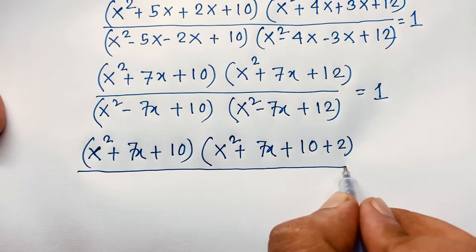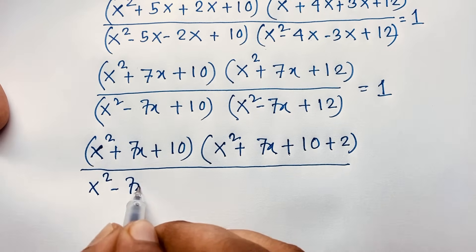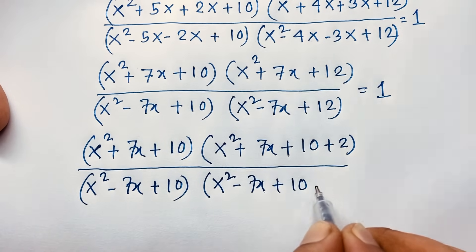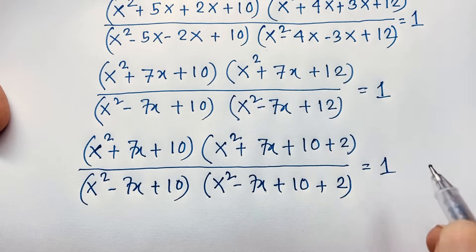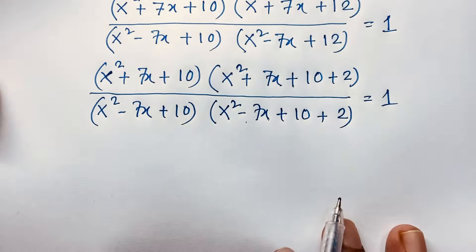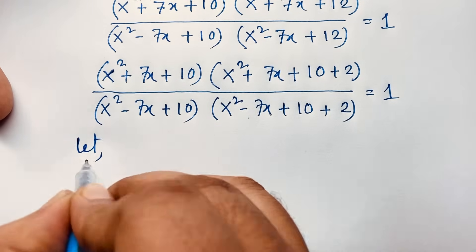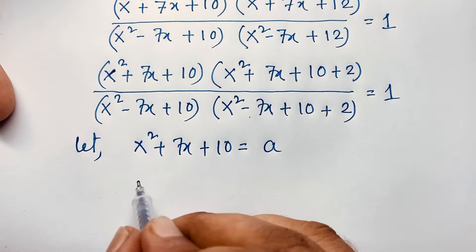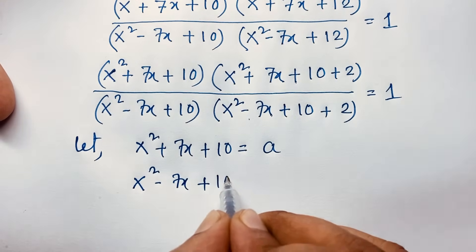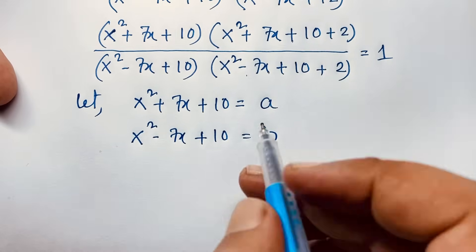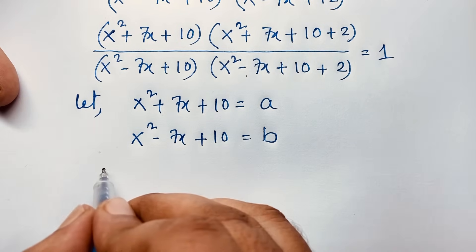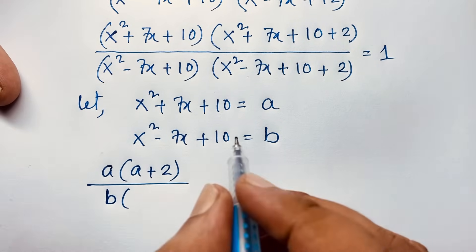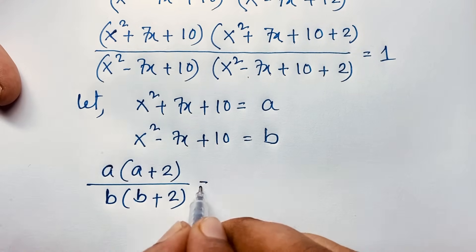Now we have (x²+7x+10)(x²+7x+12) over (x²-7x+10)(x²-7x+12) = 1. Let x²+7x+10 = a and x²-7x+10 = b. If I substitute these values, the equation becomes a(a+2) over b(b+2) equals 1.